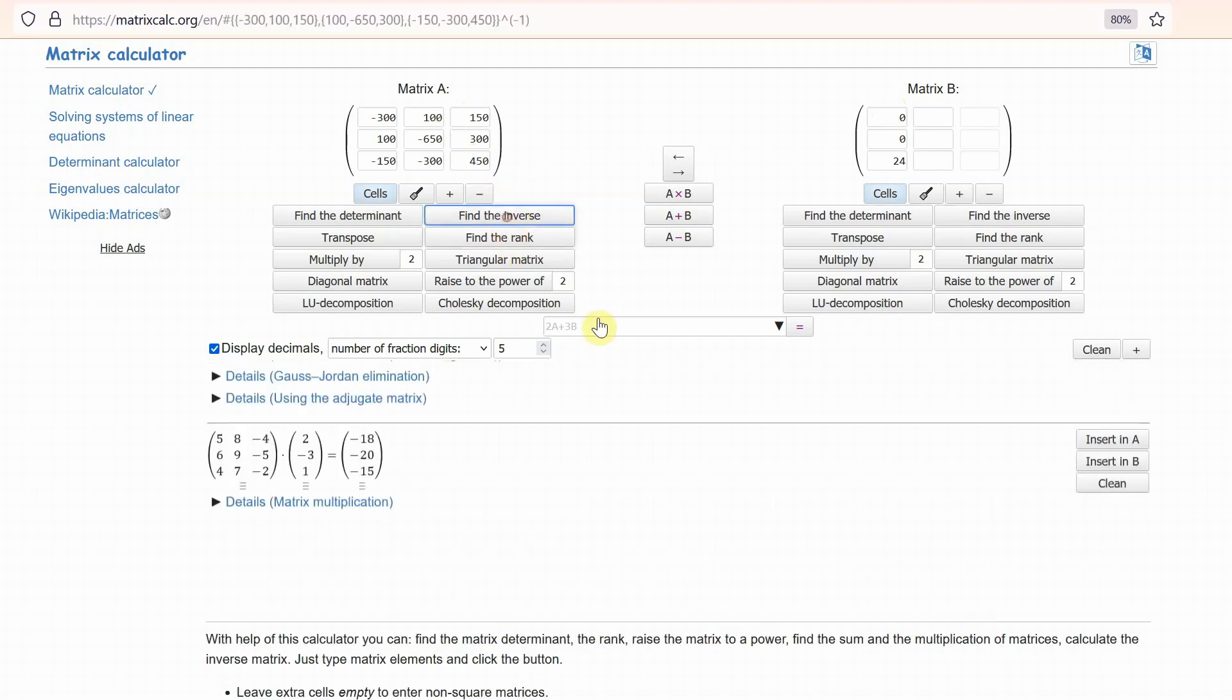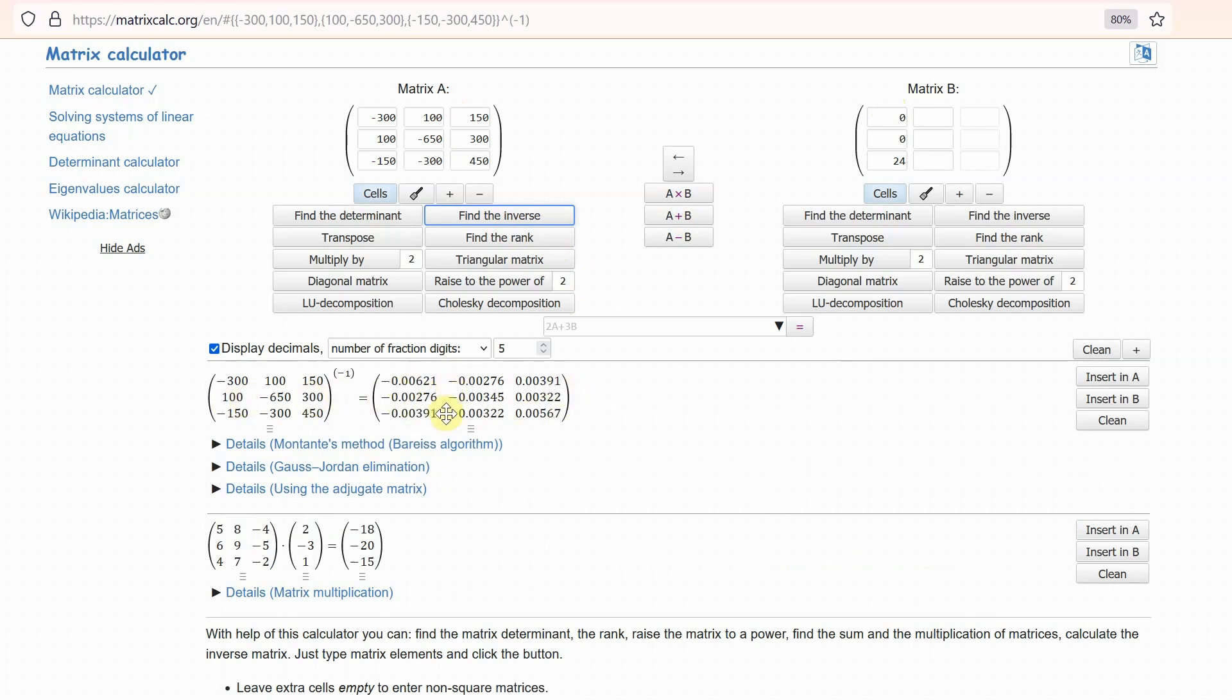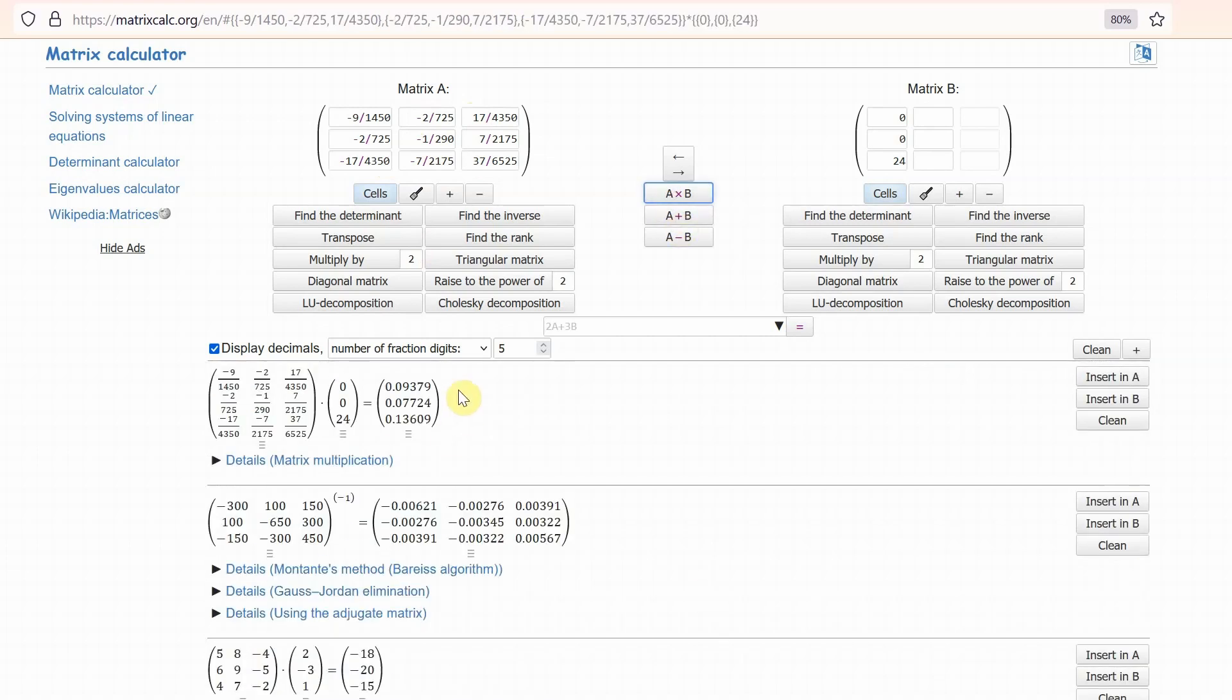And you can see down here, I've got the inverse of it. I've had to set it up to give me five decimal points, and to actually display decimals, because by default, it'll display it in fractions. And these, you can see, are the same numbers as when we use Excel and when we used MATLAB. Unfortunately, this insert A doesn't work to insert A back into matrix A. I have to actually go through and delete all of matrix A. And now that matrix A is empty, I can insert this into A. And now that I have the inverse of A here and B here, if I multiply, the answer that it gives me will be x. And there's the values for x, 93.79 milliamps for i1, 77.24 milliamps for i2, and 136.09 milliamps for i3.